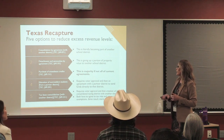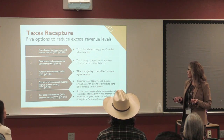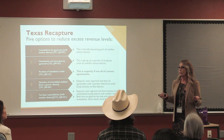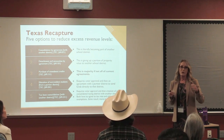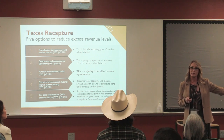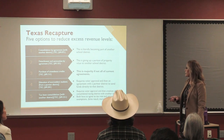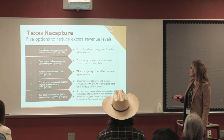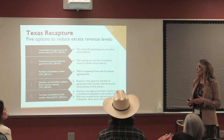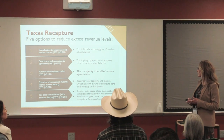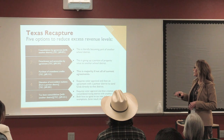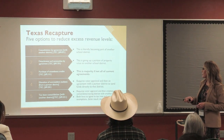Four: educate non-resident students. This requires voter approval and an agreement with another district to send money directly to them. The problem is we never really know our final revenue until about two years after the year closes, so if you send money to a district in West Texas and two years later find you were owed some back, you may not be able to collect it. Five: tax-base consolidation. This also requires voter approval and the creation of a consolidated taxing district where both districts agree on the same exemptions and tax rate. No one has ever seen option five done.